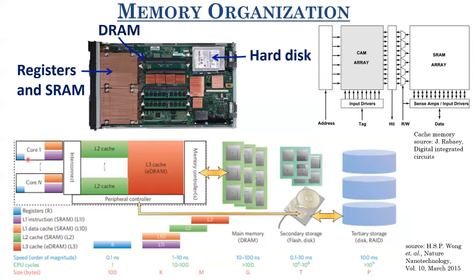L3 cache doesn't use SRAM arrays — it actually uses embedded DRAMs. The physical size of SRAM is large while DRAM cells are smaller, being one transistor and one capacitor (1T1C), allowing higher density. This system comprising the core, registers, L1 cache, L2 cache, and L3 cache is embedded on your motherboard — these memory elements are called on-chip or onboard memory. All other memory elements are off-chip because they are not on the motherboard.